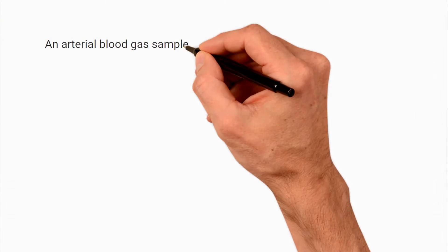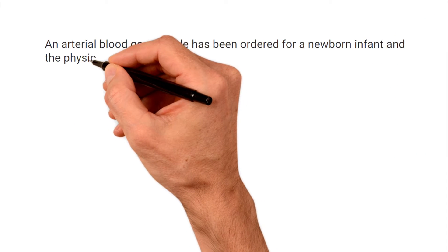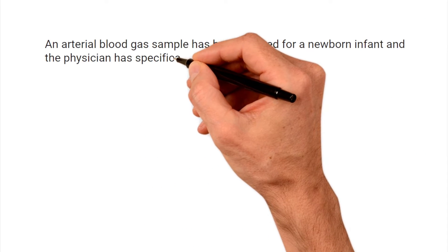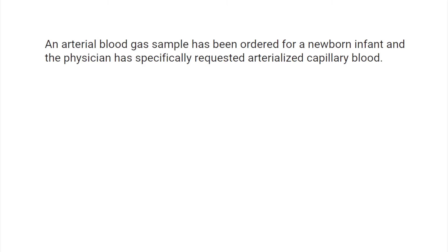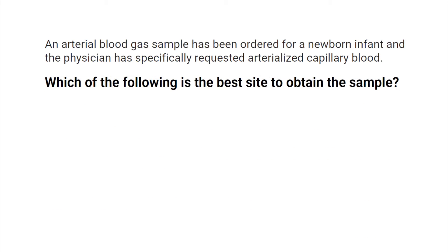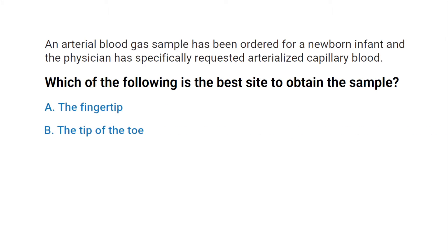An arterial blood gas sample has been ordered for a newborn infant, and the physician has specifically requested arterialized capillary blood. Which of the following is the best site to obtain the sample? A) the fingertip, B) the tip of the toe, C) the lateral area of the heel, or D) the earlobe.